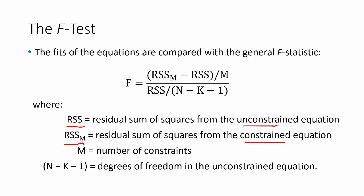M is going to be the number of constraints — in other words, the number of x variables we're choosing to leave out of the model. N minus k minus 1 will be our degrees of freedom from the unconstrained equation, the regression model we started with. K is the number of x variables, and N is the number of data points that we have.